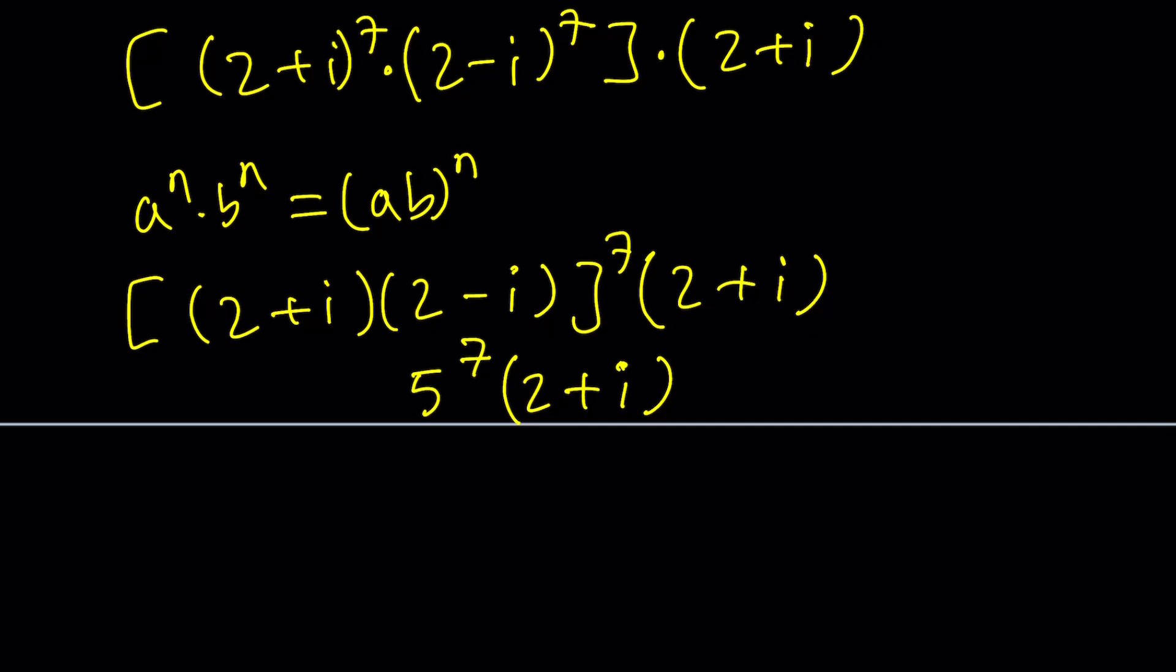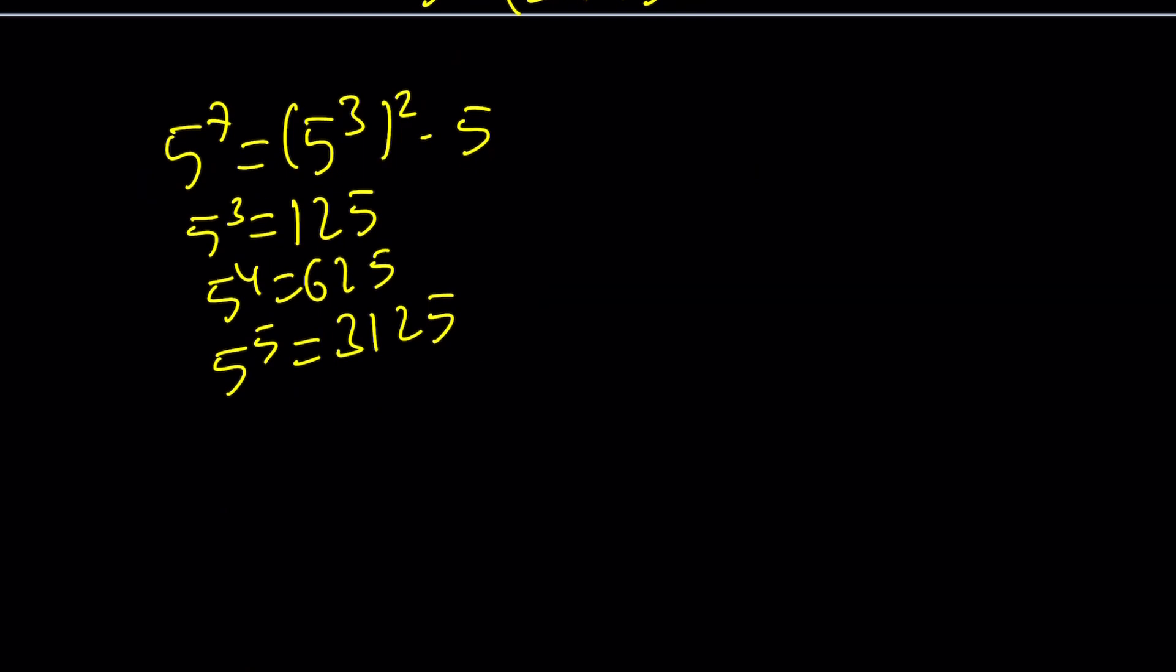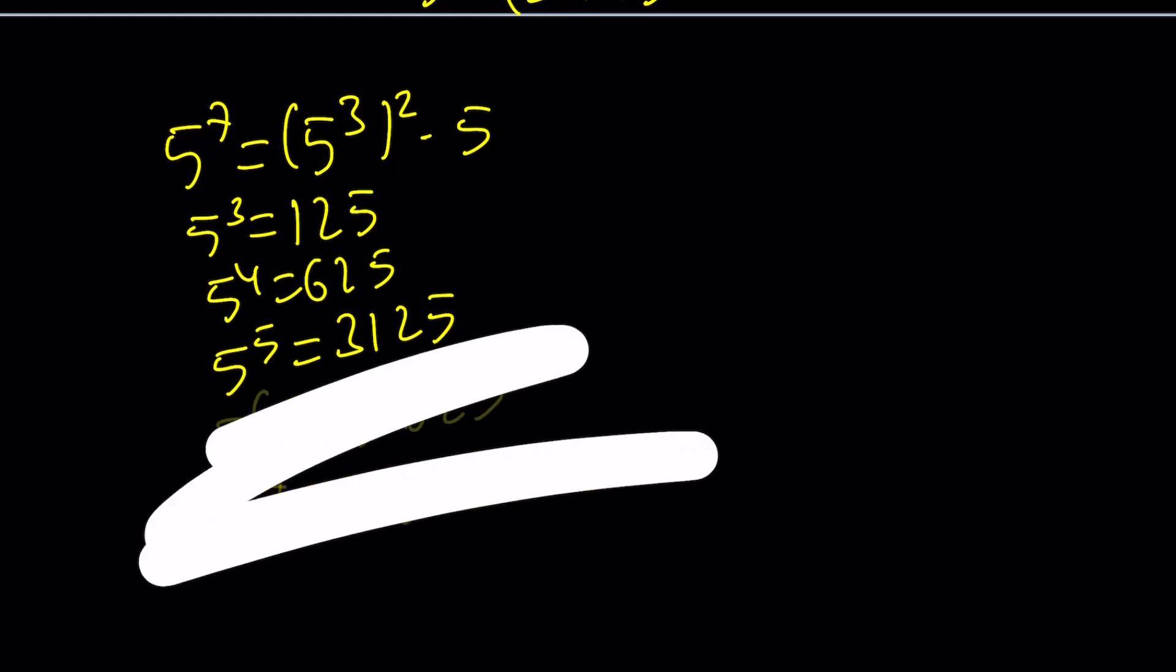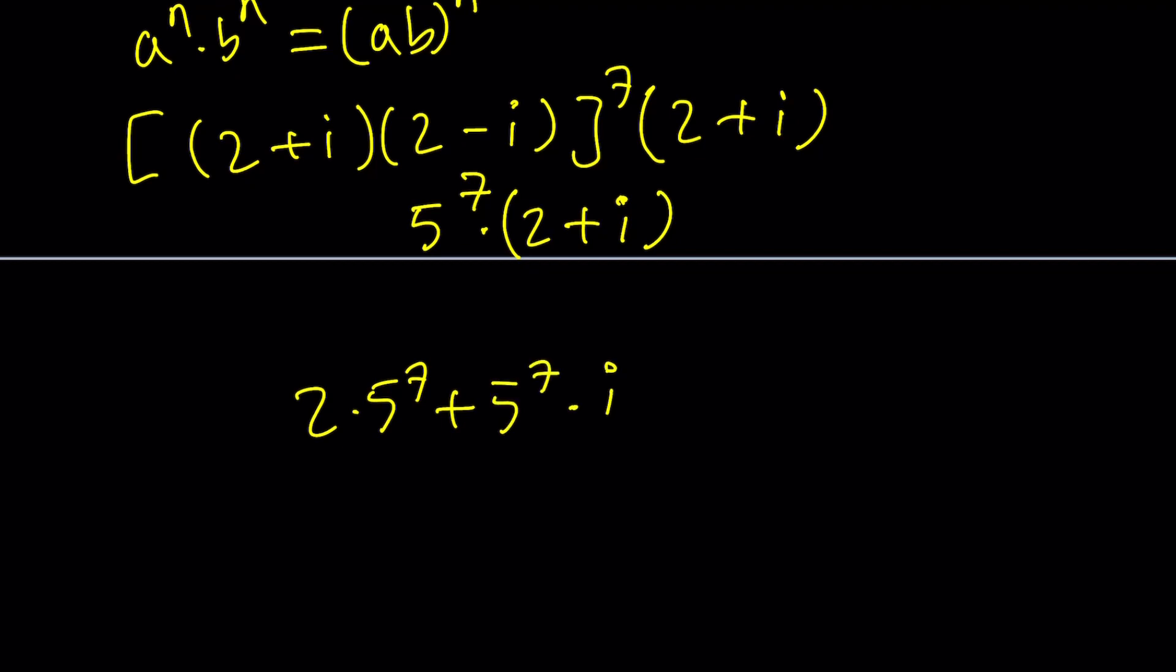So this is going to give you 5^7 multiply by (2+i) and then if you go ahead and multiply this. What is 5^7? That should be a large number don't you think? Well 5^7 is basically (5^3)^2 times 5. What is 5^3? It's 125. You could also do this. 5^3 is 125. 5^4 would be 625. 5^5 would be 3,125. 5^6 is just going to be 15,625 and finally 5^7 is going to be something like 78,325 or something. I didn't evaluate it but you can easily multiply by 5. Anyways that's a very large number. I could probably leave it as is and just write the answer as 2·5^7 + 5^7·i and that will be our answer.